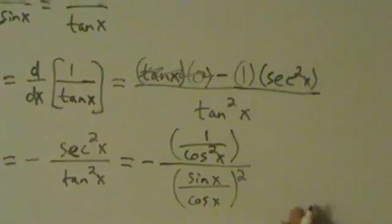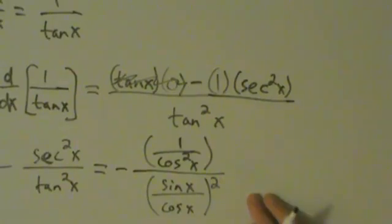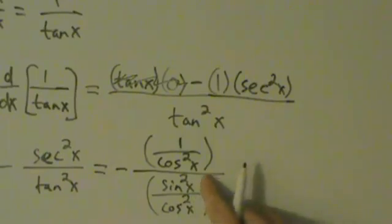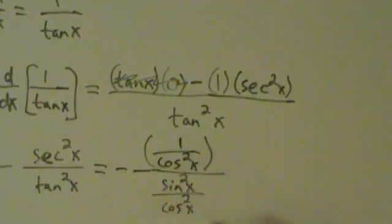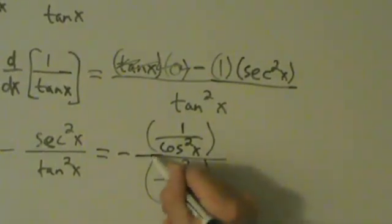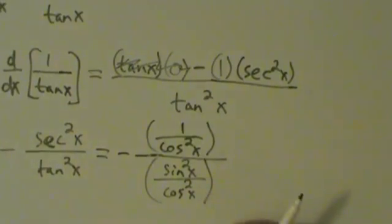Okay. So pretty much what we have is a fraction divided by another fraction. Actually, let's go ahead and write this as sine squared over cosine squared. Let's go ahead and write it like that. Sorry about that. Okay, so actually we still need those, kind of. So we have this here. Okay, 1 over cosine squared divided by sine squared over cosine squared.